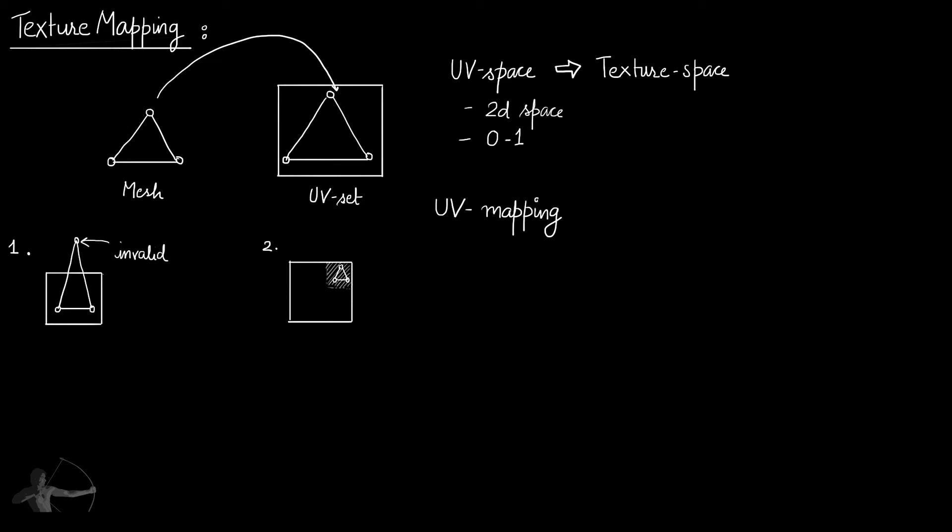So this is an overview of texture mapping. Now we understand what UV mapping is and what UV and texture coordinates are. After that, we will understand what the process of texture mapping in a shader is.